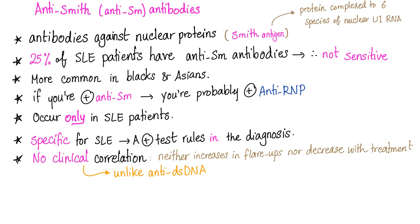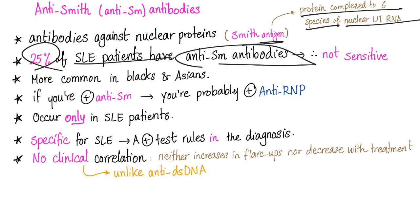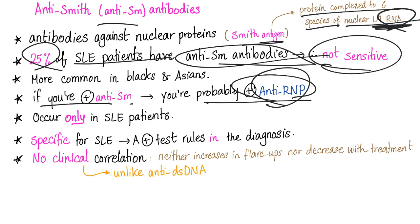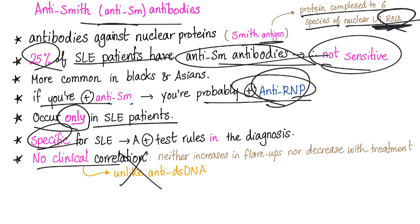Anti-Smith antibodies are antibodies against nuclear proteins called Smith antigens, which are proteins complexed to six species of nuclear U1 RNP or RNA. Only 25% of lupus patients will have anti-Smith antibodies, so by definition, anti-Smiths are not sensitive. If you are positive for anti-Smith, you'll probably have positive RNP as well — both are against RNA. Anti-Smith occurs only in lupus patients, making them very specific for lupus, but unfortunately they do not correlate with disease activity, unlike anti-double-stranded DNA.